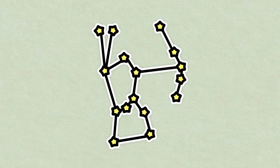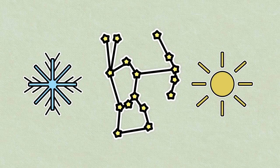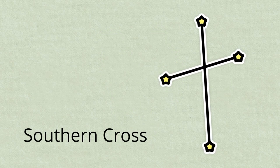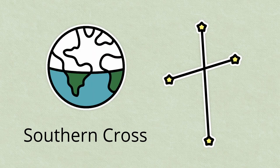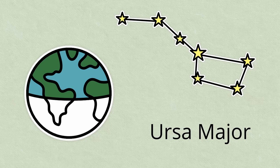Some constellations can only be seen during certain times of year and only from certain parts of the world. For example, the Southern Cross can only be seen from the Southern Hemisphere, while Ursa Major can only be seen from the Northern Hemisphere.